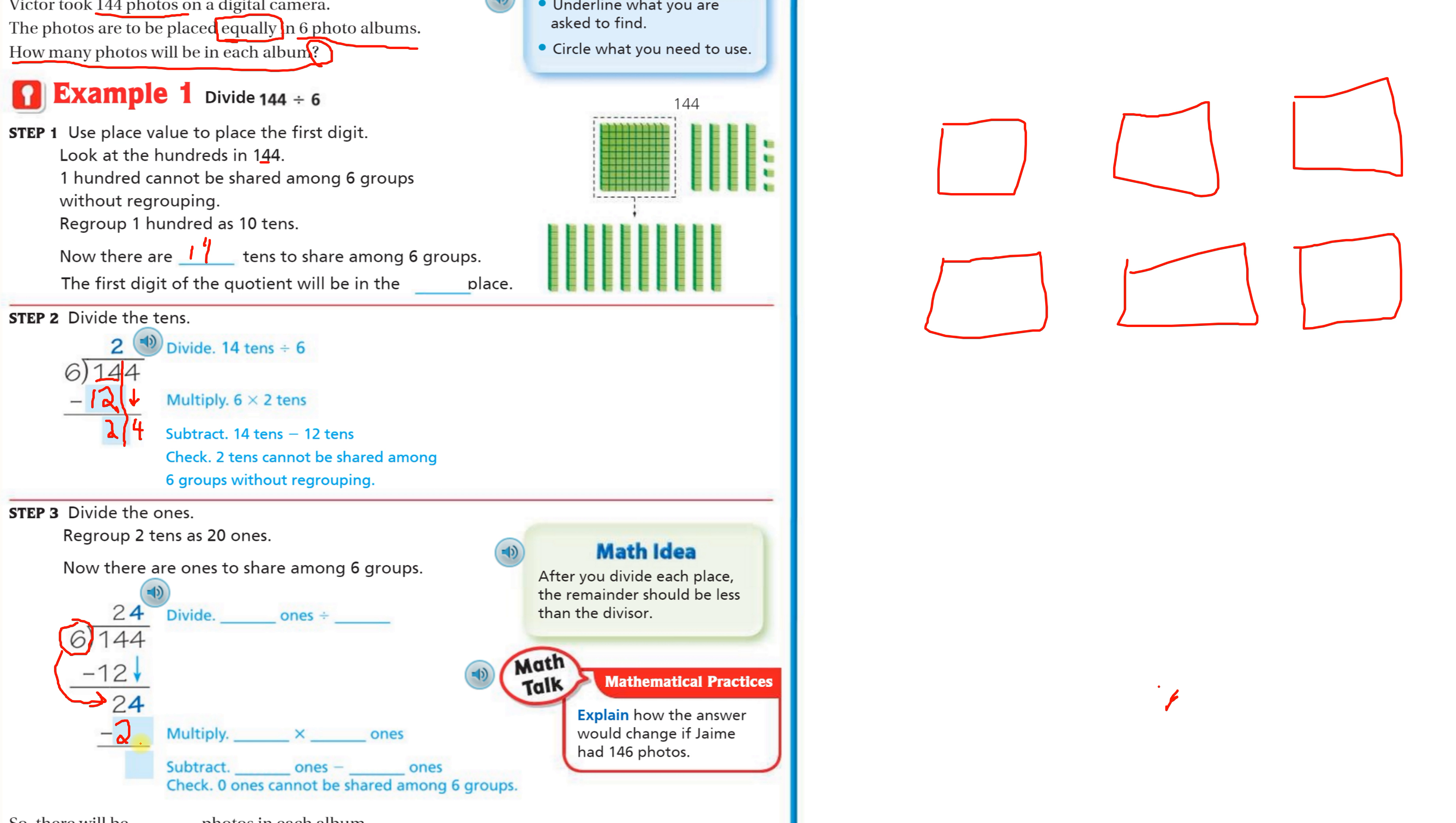So that's the number that will go down here. Then we subtract and we get zero. So 24 ones divided by six. We multiply four times six, this divisor out here. Then we subtract 24 ones minus 24 ones. That's this step right here. Zero ones cannot be shared amongst the six groups.